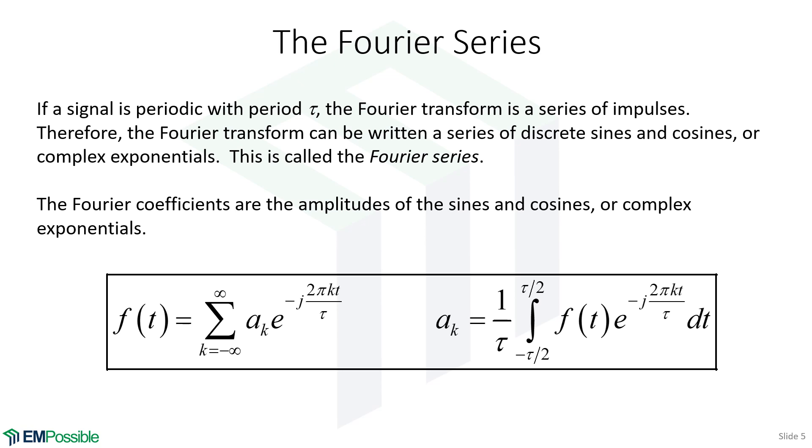Or we can also write it as discrete complex exponentials. So when we write our Fourier transform as a series of sines and cosines or complex exponentials, we call that a Fourier series.